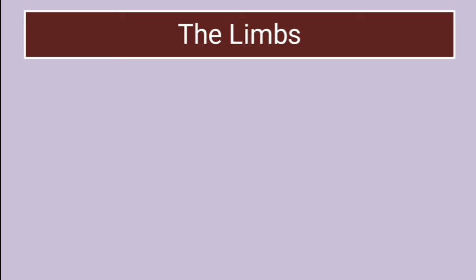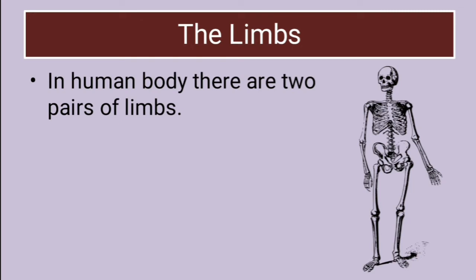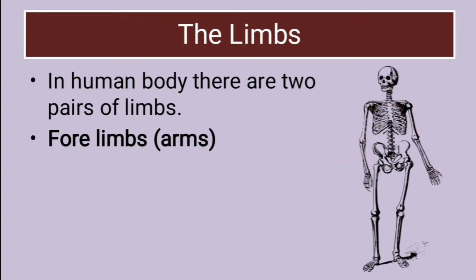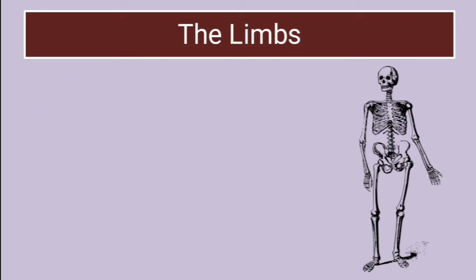The next important part is the limbs. In the human body there are two pairs of limbs: the forelimbs, also called arms, and the hind limbs, also called legs.